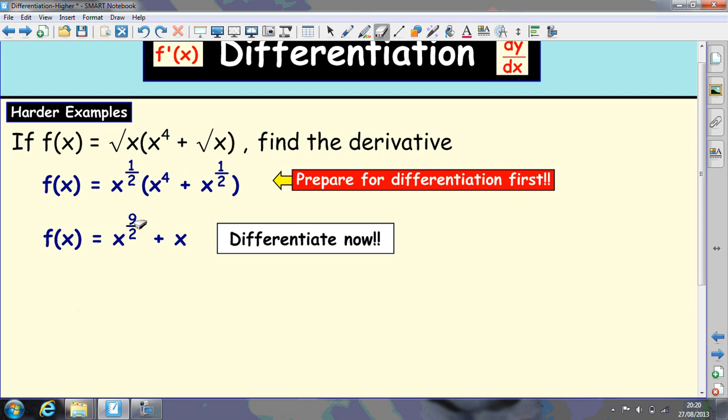Now we can differentiate. Take the 9/2 down and reduce it by 1. To reduce this by 1, you're taking away 2 halves. So that's going to go to 7/2. So (9/2)x^(7/2). And this just goes to plus 1.